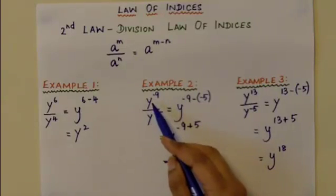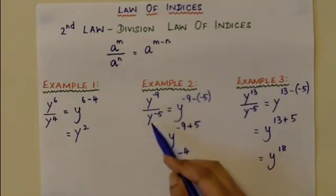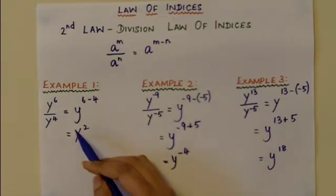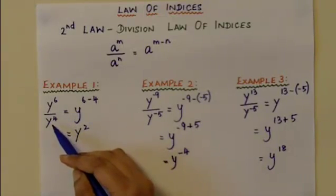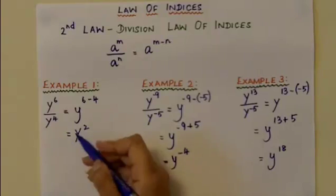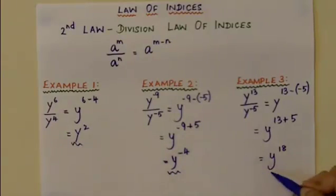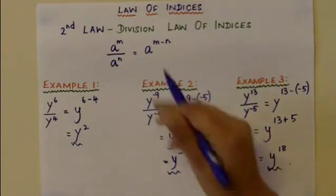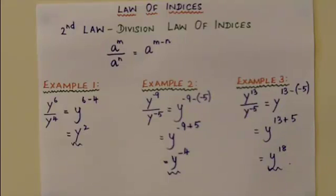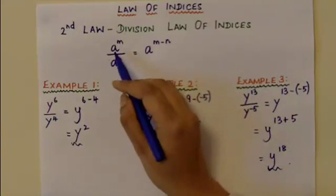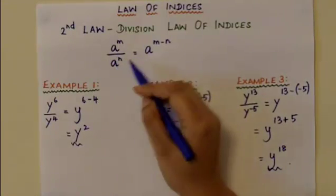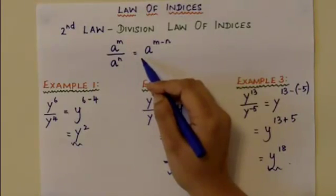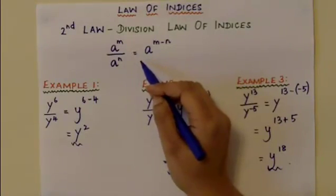To recap: y to the power of minus 4 is equal to y to the power of minus 9 divided by y to the power of minus 5, and y squared is equal to y to the power of 6 divided by y to the power of 4. All these answers were simplified using the division law of indices, which states that a to the power of m divided by a to the power of n is equal to a to the power of m minus n.